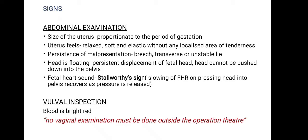Moving on to signs: abdominal examination and vulval inspection can be performed. On abdominal examination, check whether the size of the uterus is proportionate to the period of gestation, whether the uterus feels relaxed and soft, and if any tenderness is present. There is persistence of malpresentation because the placenta occupies the lower segment, leaving insufficient space for the baby, so the baby remains in breech, transverse, or any unstable lie. The fetal head is floating and cannot be pushed down into the pelvis because the placenta occupies that space.